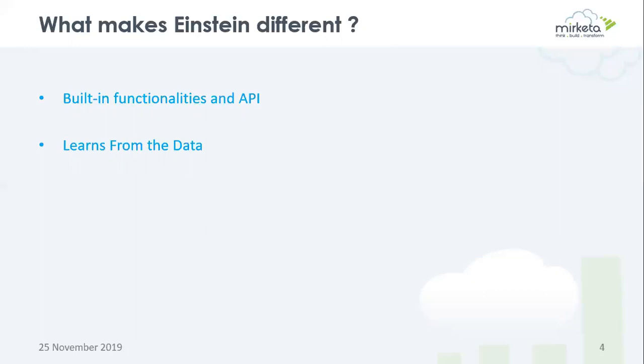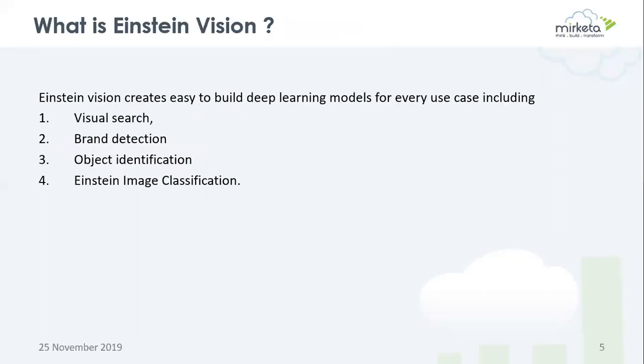Einstein's built-in functionalities and API are easy to use, powerful to work with, and secure to trust. These two things make Einstein different. Einstein Vision is a set of powerful new APIs that allow Force.com and Heroku developers of all skill levels to bring image recognition to CRM and build AI-powered apps fast.